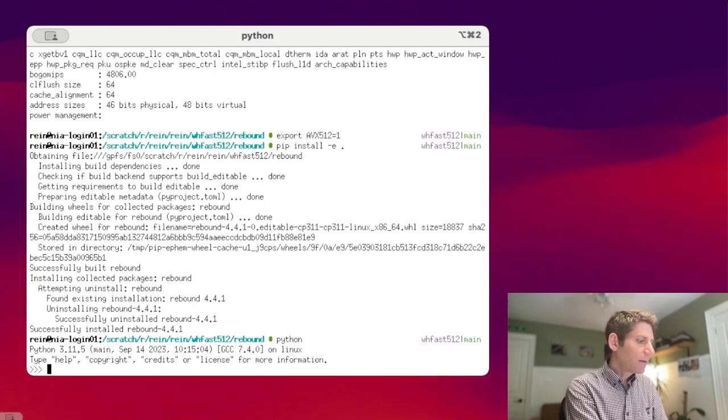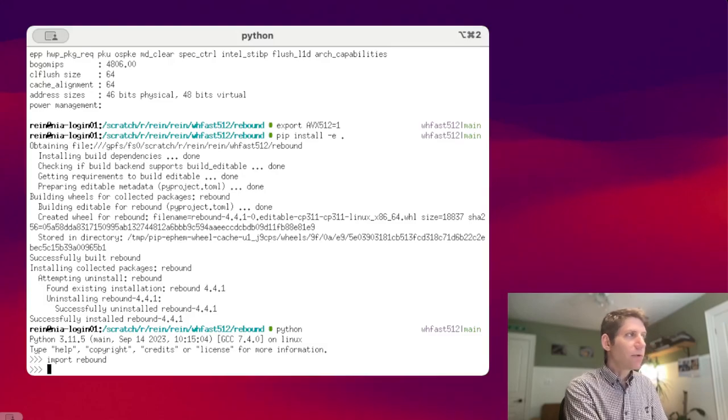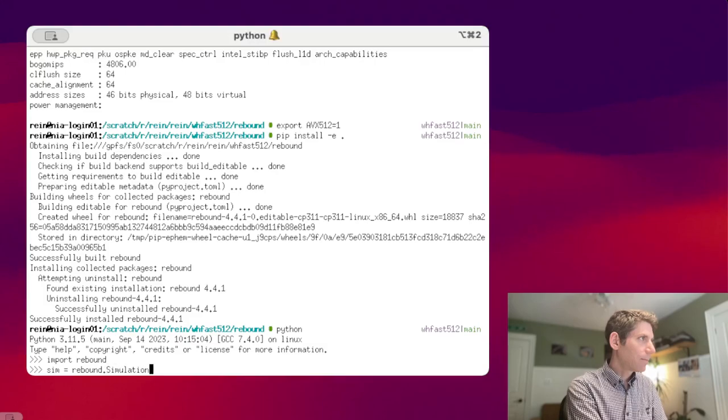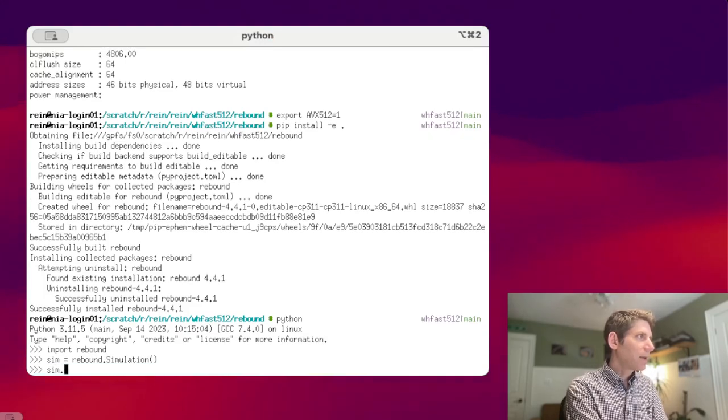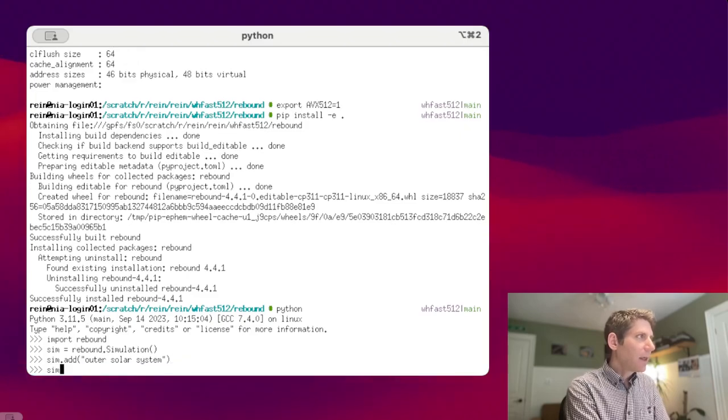Now that Rebound is installed, we can start Python. We can import Rebound. We can start a new simulation. And we can add some test particles to it. In this case, let's use the outer solar system as a test case. When you want to use the new integrator WHFAST-512, you just set sim.integrator equals to WHFAST-512.